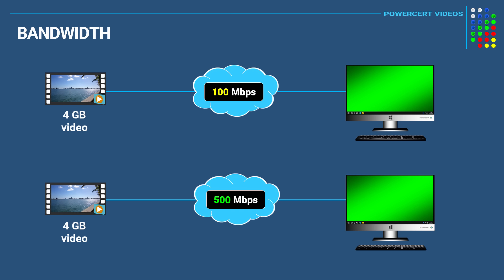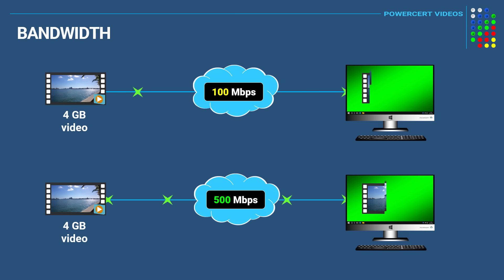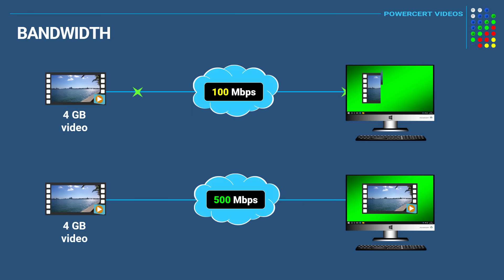This works just like an internet connection. If both of these connections were to download a video from the internet that's four gigabytes in size, the 500 megabit connection can download the video to your computer a lot faster. In theory, the 100 megabit connection would take about five and a half minutes to download a four gigabyte video, while the 500 megabit connection would only take a little over a minute.